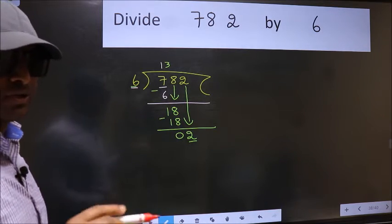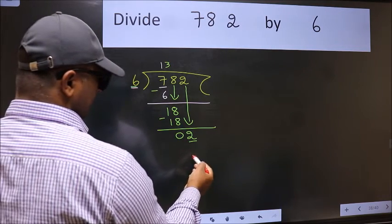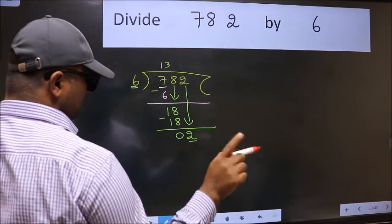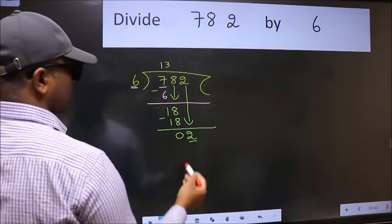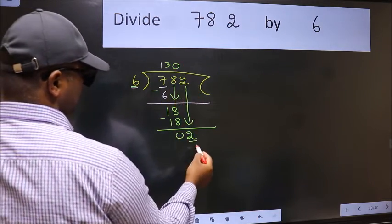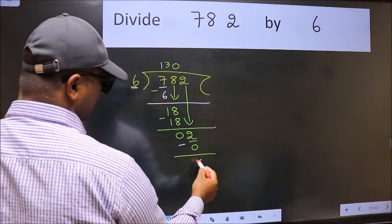Instead of that, what you should think of doing is, which number should we take here. If I take 1, we will get 6. But 6 is larger than 2. So what we do is, we take 0. So 6 into 0, 0.